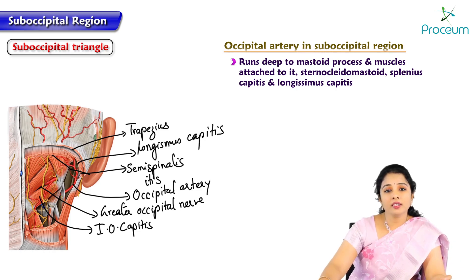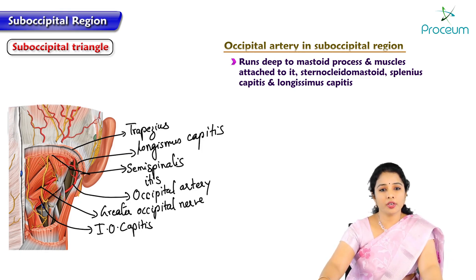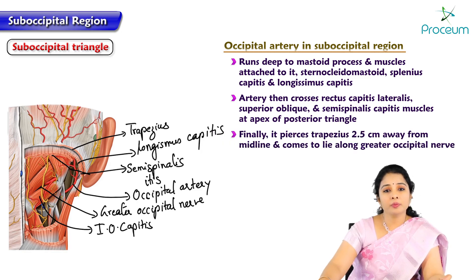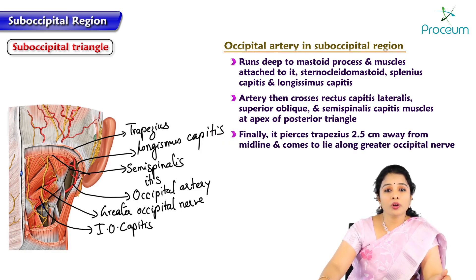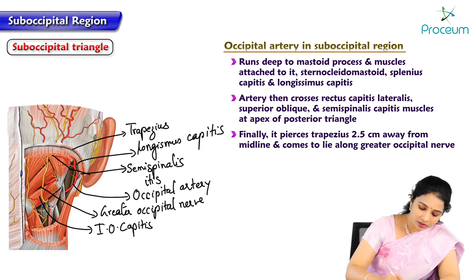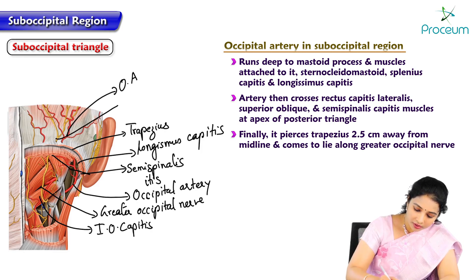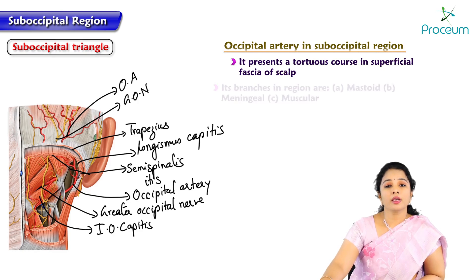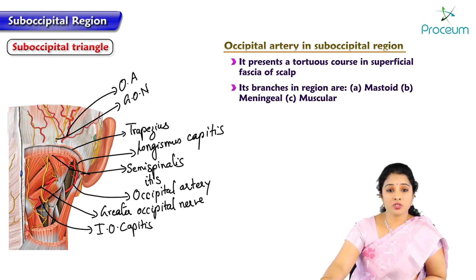This artery is present almost at the apex of the posterior triangle of the neck. When the artery crosses the rectus capitis lateralis and superior oblique muscle and semispinalis capitis muscles at the apex of the posterior triangle, it finally pierces the trapezius — around 2.5 cm away from the midline — and comes to lie along the greater occipital nerve. It presents a tortuous course in the superficial fascia of the scalp and branches into mastoid branches, meningeal branches, and muscular branches.